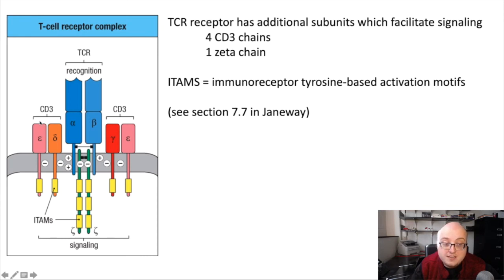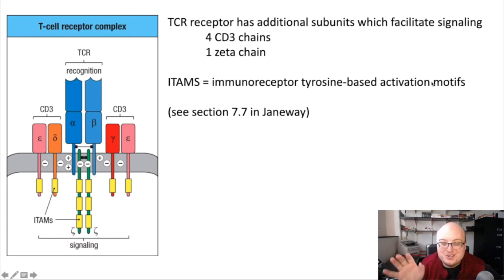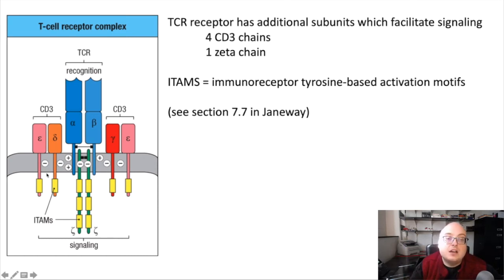Those accessory proteins include a molecule called CD3. There are four different chains of CD3 associated with the overall T-cell receptor complex. There's also an additional component called the zeta chain, which associates with the cytoplasmic tails of the T-cell receptor. What's important is that CD3 and the zeta chain have motifs called ITAMs—immunoreceptor tyrosine-based activation motifs. ITAMs can be phosphorylated, and when they are, that allows them to recruit other signaling molecules to the T-cell receptor to transmit a signal.